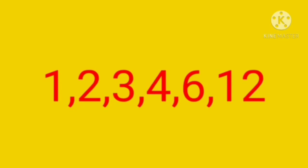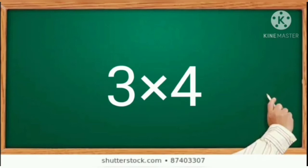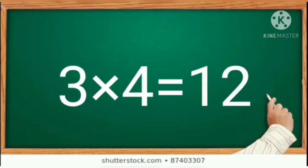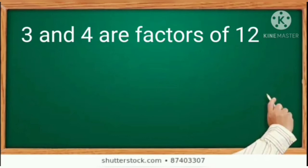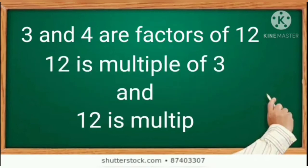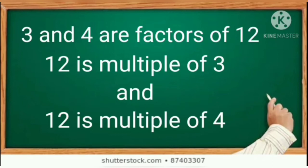So 1, 2, 3, 4, 6, and 12 are the factors of 12, and also 12 is the multiple of 1, 2, 3, 4, 6, and 12. Let us consider one example: 3 multiplied by 4 gives 12. So 3 and 4 are factors of 12, and 12 is the multiple of 3 and also the multiple of 4.